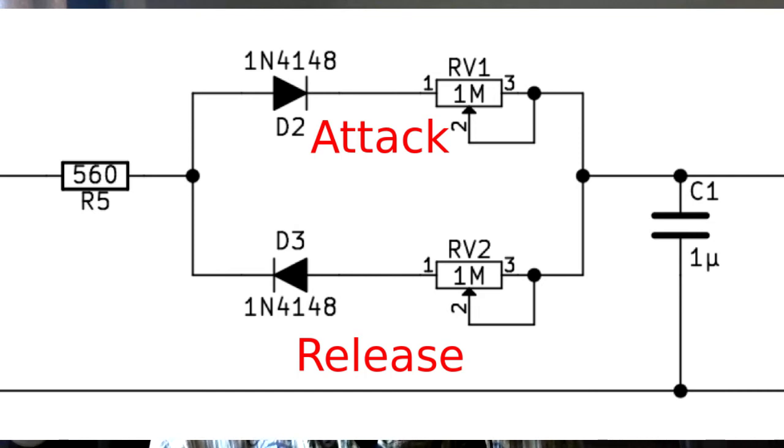So by altering that resistance we can alter the rate of flow, so we can alter the slope of the attack and release phases on the envelope.